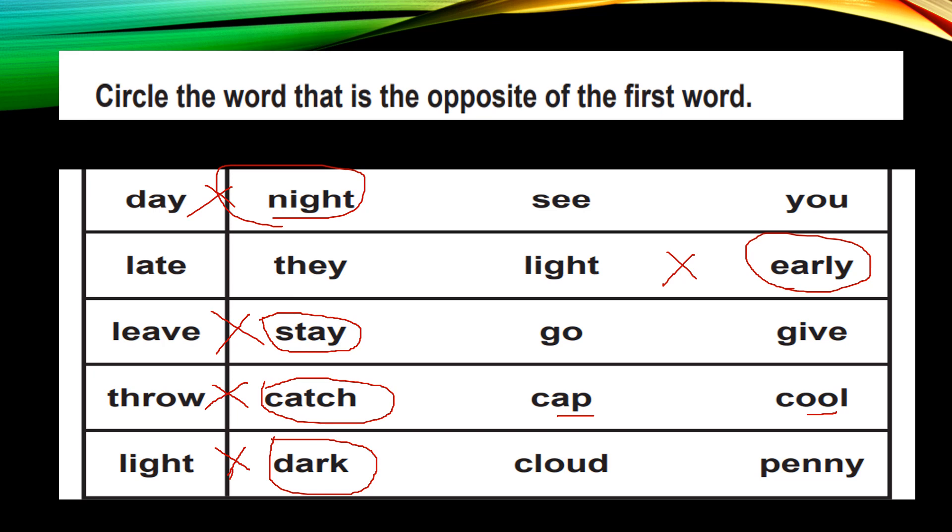Then comes day night, late early, leave stay, throw catch, light dark. Here cloud is there, cloud will not make any opposite. Then comes penny. Penny, that means penny is a small amount, a tiny, it is called a penny.